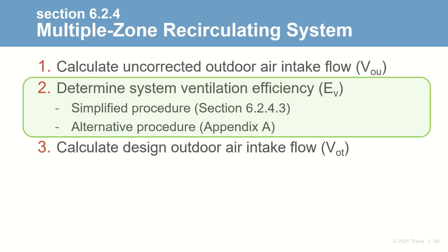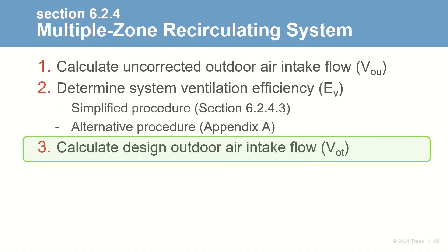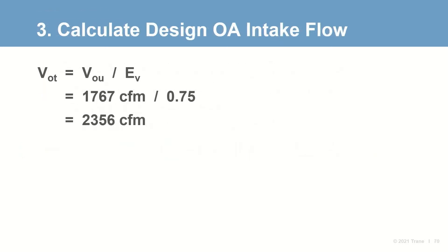The standard also includes an alternative procedure for calculating System Ventilation Efficiency in Appendix A, which we won't walk through today. The final step for a multiple zone recirculating system is to calculate the Design Outdoor Air Intake Flow V-sub-OT: the uncorrected outdoor air intake flow of 1,767 CFM divided by the System Ventilation Efficiency of 0.75, giving a Design Outdoor Air Intake Flow of 2,356 CFM.